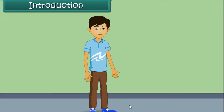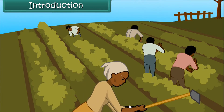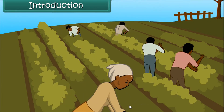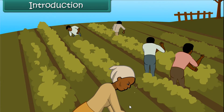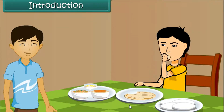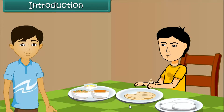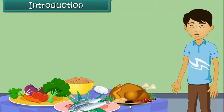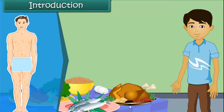Dear friends, you must have seen farmers working in paddy fields. They work all day long. But have you ever wondered where they get the energy to do their work with full enthusiasm? Like us, they also get this energy from the food that they eat. Food is the main source of energy for our body to perform daily activities. We get our food from both plants and animals. Food has to be produced on a large scale to meet everyone's requirements. In this module, we will discuss crop production and its management for the distribution of food.